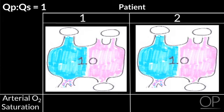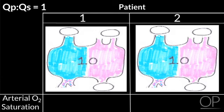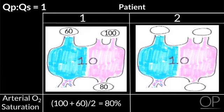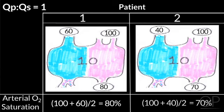To illustrate the quantitative importance of this: assume two patients with cyanotic heart disease, both with a QP to QS ratio of 1. If in the first patient the pulmonary venous saturation is 100% and the systemic venous saturation is 60%, this gives an arterial saturation of 80%. If the second patient also has fully saturated pulmonary veins but the systemic venous saturation is 40% rather than 60%, that patient's arterial saturation will be 70% — substantially less. There is a considerable influence of systemic venous O2 saturation on arterial saturations in congenital heart disease.